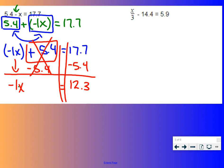Undo the multiplication with division. So we divide both sides by negative 1. Here, it's a negative 1. So we divide it by negative 1. That cancels out. We're left with x equals 12.3 divided by negative 1 is going to be negative 12.3.